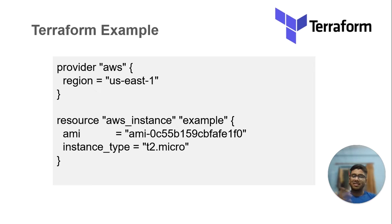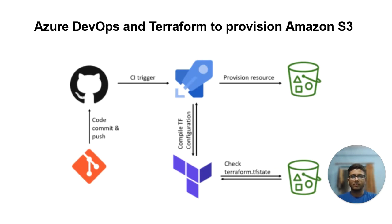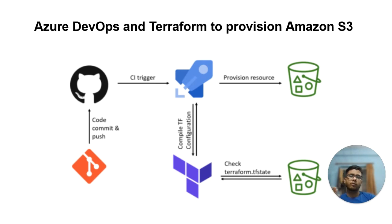Terraform code is written in HCL, as we all know, and here is a simple example for spinning up an AWS instance. Let's see an example where Terraform is used to intervene between Azure DevOps and AWS S3. We are pushing the code on GitHub through to Azure, and spinning up the S3 bucket after the intervention of Terraform.